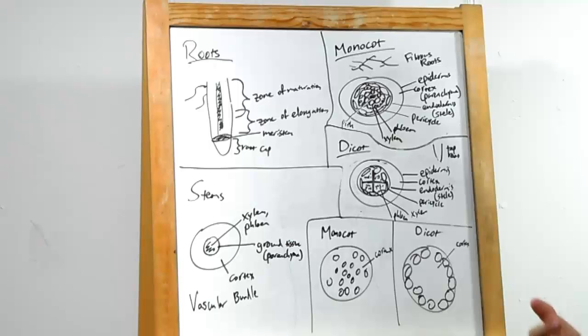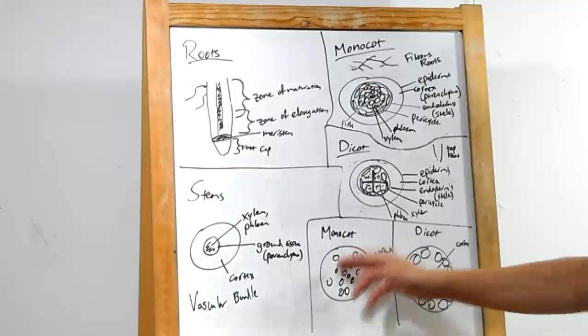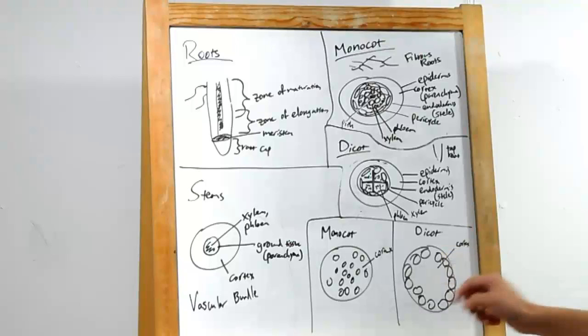In a monocot, we have these vascular bundles, I drew them as circles, spread throughout the stem. Whereas in dicots, we have them spread in a very organized ring.